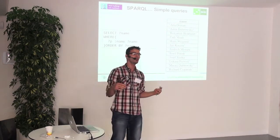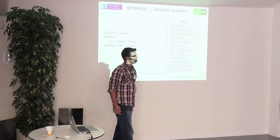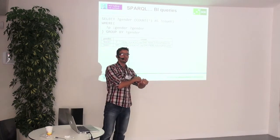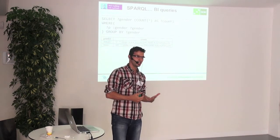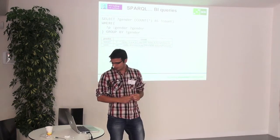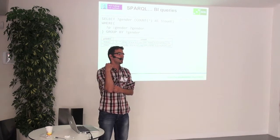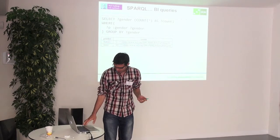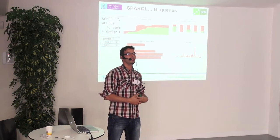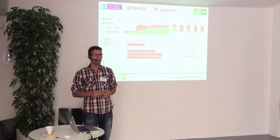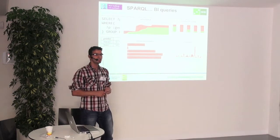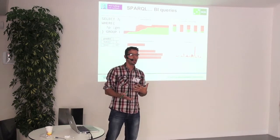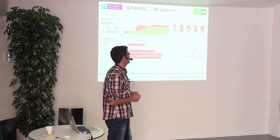The first query is quite simple: give me all the names of the speakers. The second query looks like a business intelligence query — these aggregate data along some dimensions and are mostly used for reports and dashboards. This query aggregates the data and gives the number of speakers per gender: two female speakers and eight male speakers. Generalizing this, with SPARQL you should be able to do all typical BI queries like roll up and drill down — aggregate data in different directions and get measures, counts, sums, and so on.